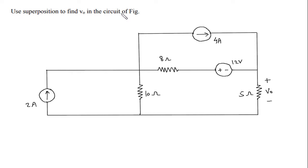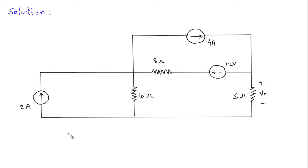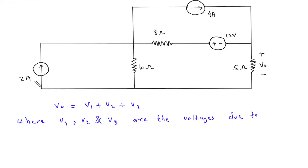Use superposition to find Vo in the circuit. We have to find Vo using the superposition theorem. There are 1, 2, and 3 independent sources — two current sources and one voltage source. Vo is equal to V1 plus V2 plus V3, where V1, V2, and V3 are the voltages due to the 2 Ampere, 4 Ampere, and 12 Volt sources respectively.